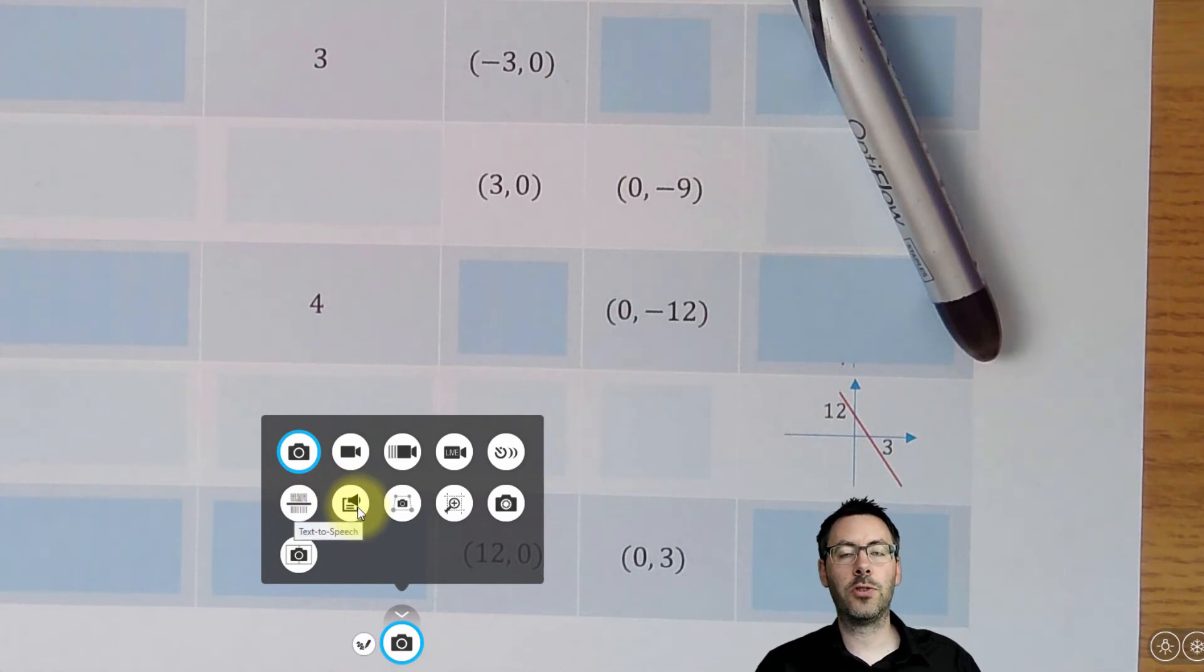You've got text-to-speech, which will scan text that's on the image and will read it out for you. You've got a scan document option. You can put a page under the visualizer, it will find the corners, and it will produce a nice copy of that document for you, which might be good for saving or even printing out.